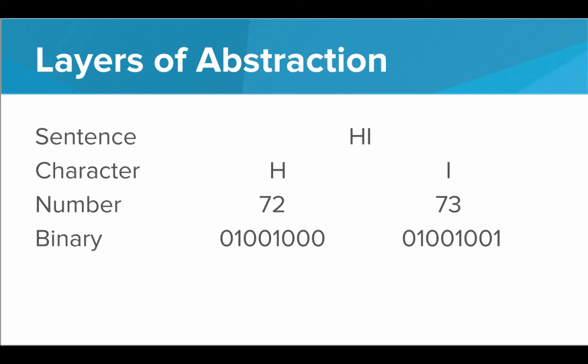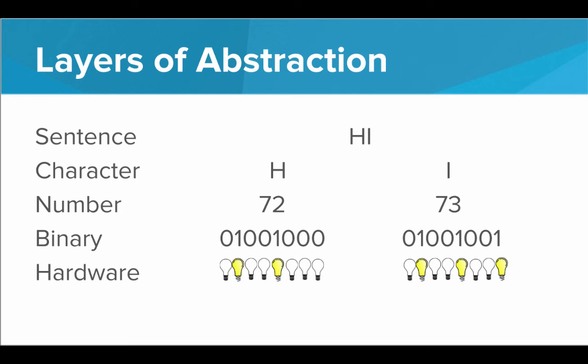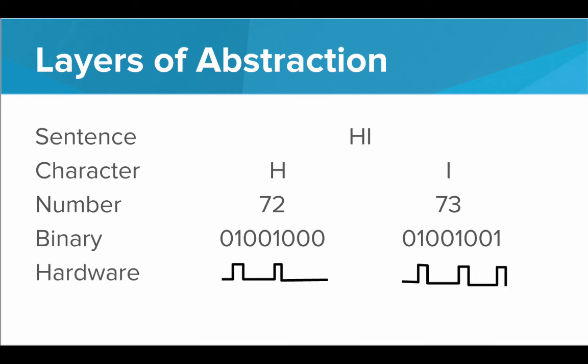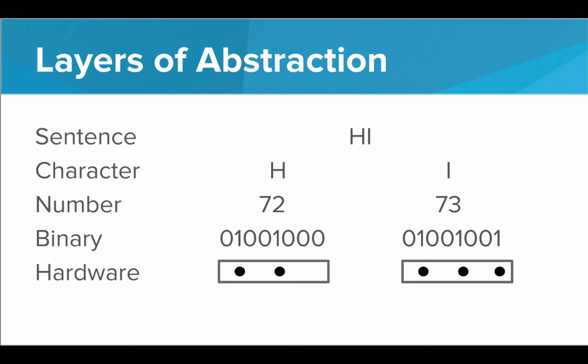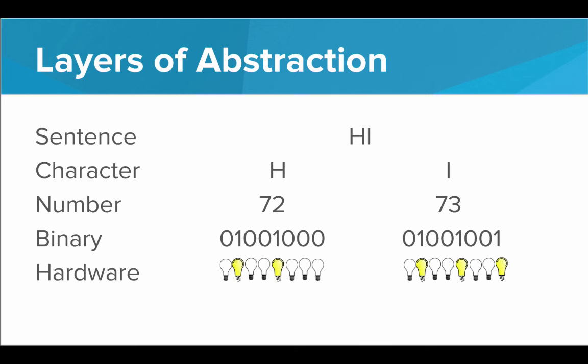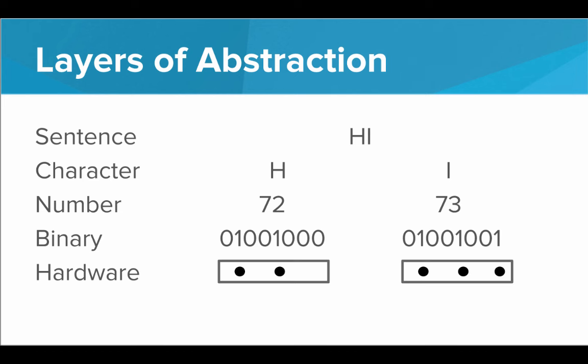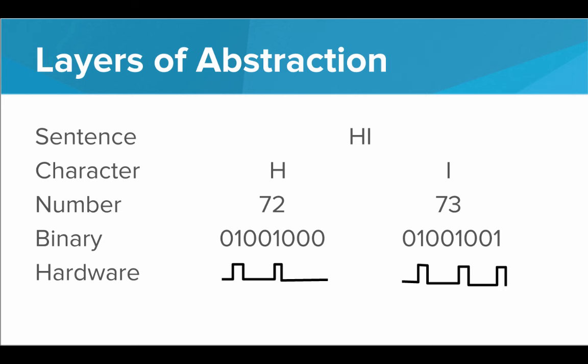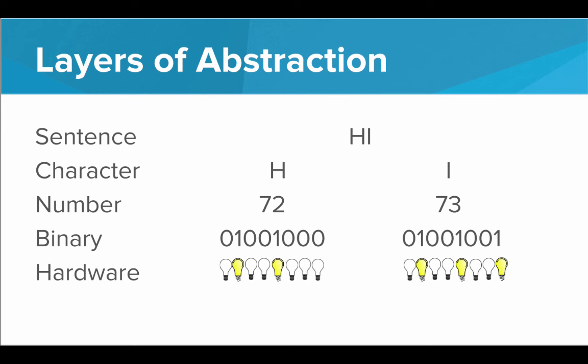But it turns out even these binary numbers are not the lowest level of abstraction. There is actual physical hardware encoding these zeros and ones for permanent storage. This could be a sequence of lights that are on or off, bumps or valleys on the surface of a disk, or even literal holes punched in a piece of paper called a punch card. What's incredible is that no matter what the exact hardware implementation is, the software result is the same — you are still encoding the sentence 'hi.'